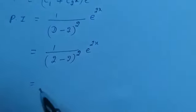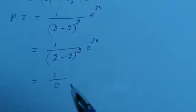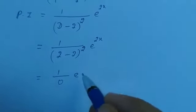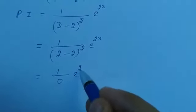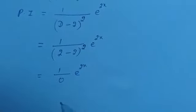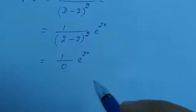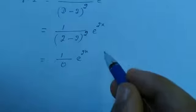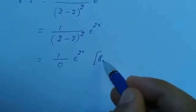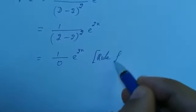That gives us 1 by 0 into e raised to 2x. If the denominator is 0, we cannot find the value. So here the rule fails.